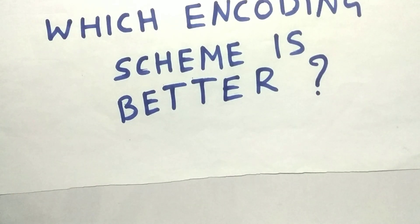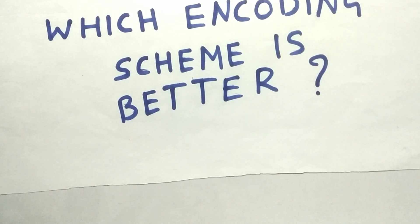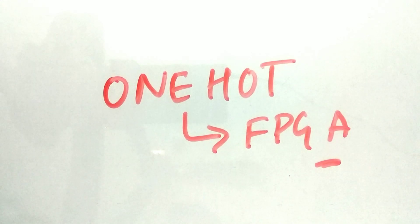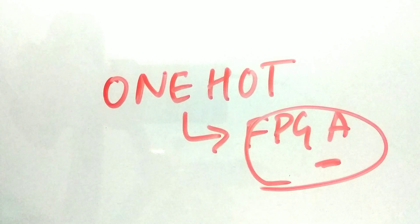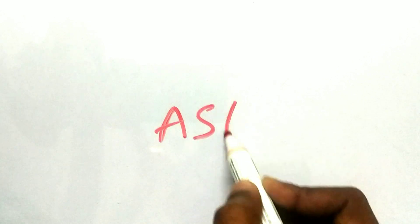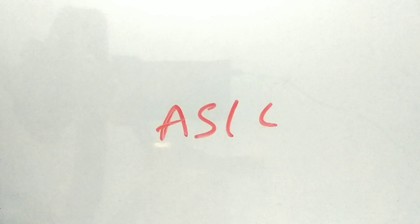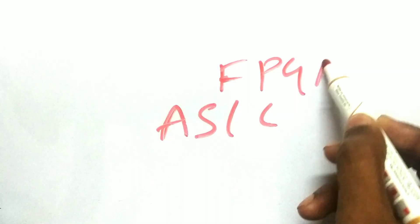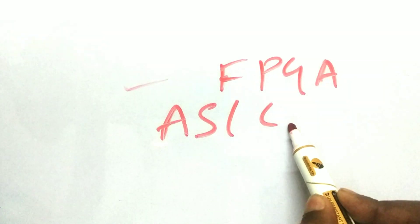So which encoding scheme is better? It depends on your design. If your design is on an FPGA, one-hot encoding is better because FPGAs have a large number of flops and there is no shortage of flops in an FPGA implementation. Binary encoding is not well-suited for FPGA. Binary encoded scheme does well in ASIC designs because we can have more combinational logic and there is no restriction on flop usage as there is in FPGA. Choose the encoding scheme based on your target platform.